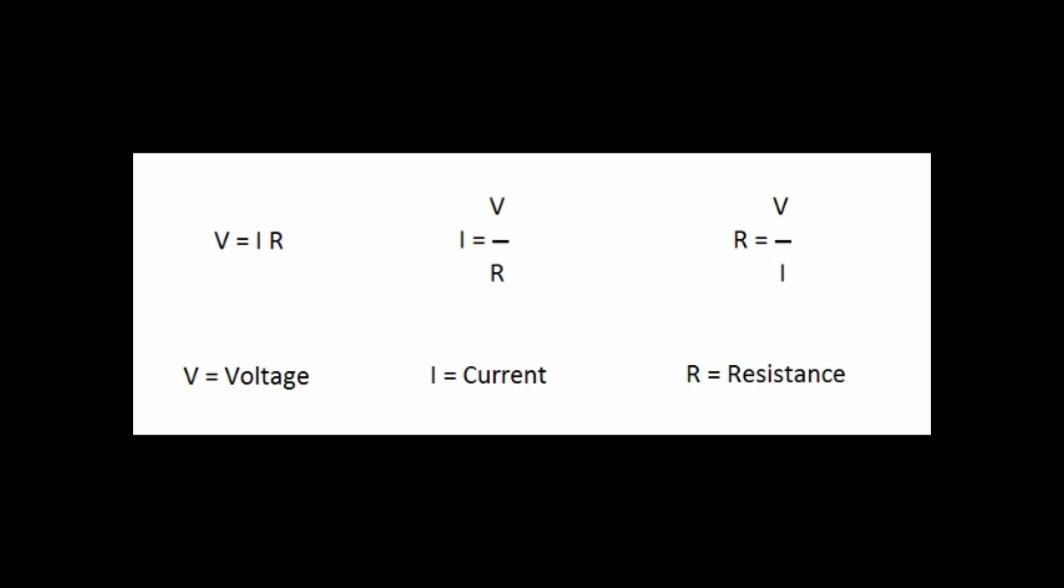Ohm's law states that the current in a conducting material is directly proportional to the applied voltage and inversely proportional to its resistance. It is one of the most important laws in electronics that you need to understand and remember.